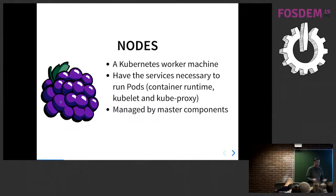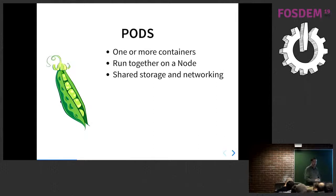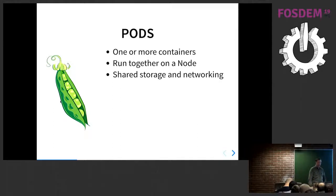A couple of the objects in Kubernetes that'll be relevant to today's talk are nodes, which are Kubernetes worker machines. They have everything needed to run pods, including the container runtime like Docker or CRI-O, as well as all the Kubernetes bits like the kubelet, kube-proxy, etcd, and all that stuff. Pods are basically a logical application unit that consists of one or more containers. They all get scheduled together and run on the same node, sharing access to the same storage and networking.